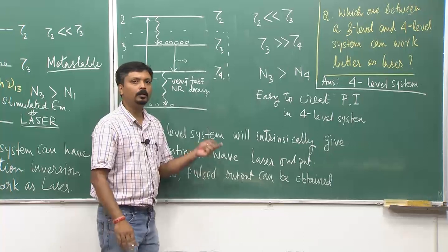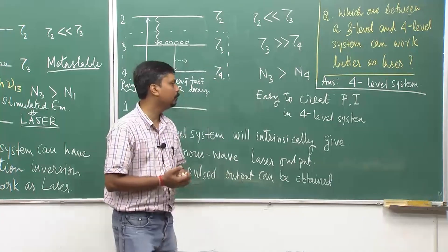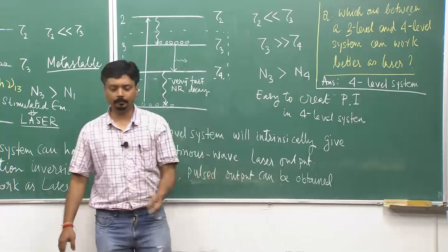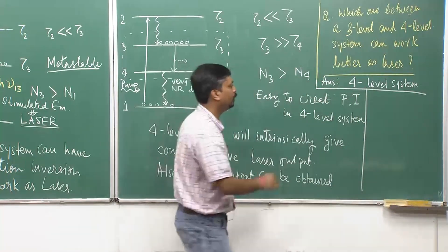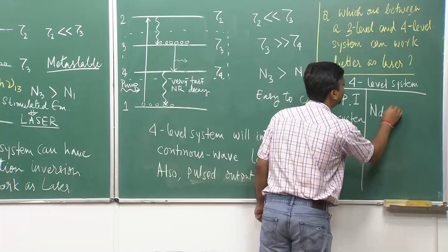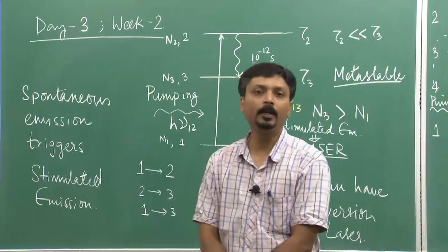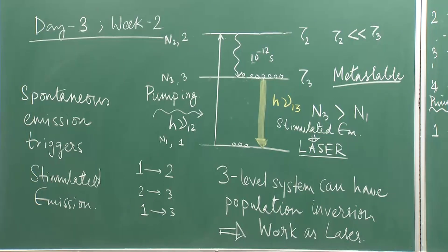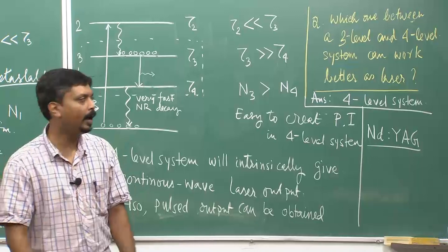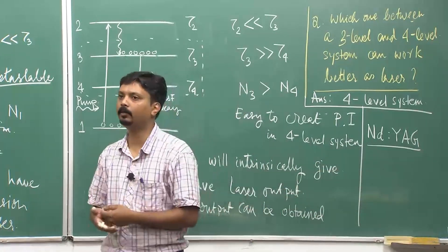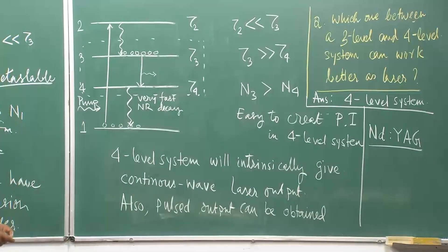Also, the two reasons we discussed are that it can be operated both as a continuous wave as well as a pulsed source. Because of these two reasons, the four-level system is always better. An example of a four-level system — the most famous one — is neodymium yttrium aluminum garnet, or in short it is called Nd:YAG laser, and an even shorter term is just YAG laser. The four-level system is very common and this is one of the most common lasers used industrially and in scientific laboratories. We will talk about this in quite some detail in one of the following classes when we discuss different types of lasers.